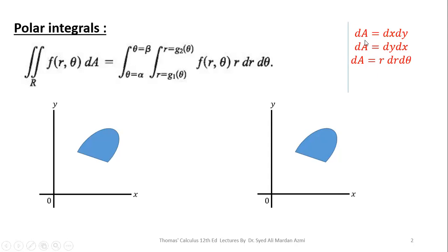Please remember, in the Cartesian system we were used to replacing dA with dx dy or dy dx, but in polar coordinates we will always use dA as R dr d-theta.